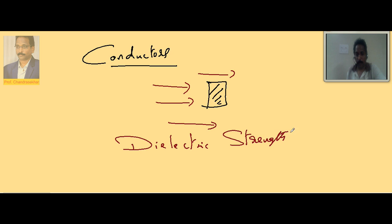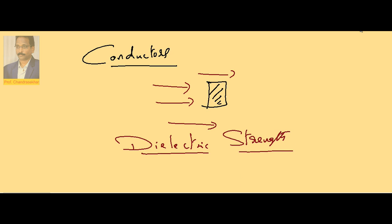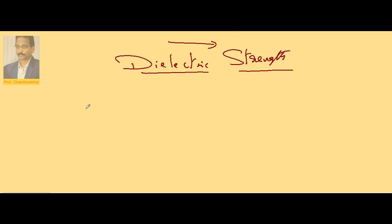Dielectric strength is the maximum strength of the electric field up to which an insulator can withstand without becoming a conductor. Beyond this dielectric strength value it is a conductor; below that it is an insulator. For example, if I take air, the dielectric strength is 3 × 10⁶ volts per meter.